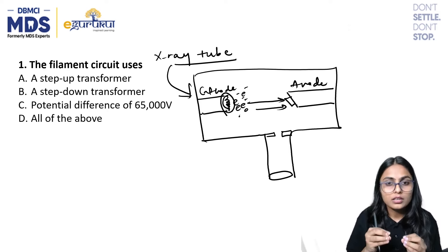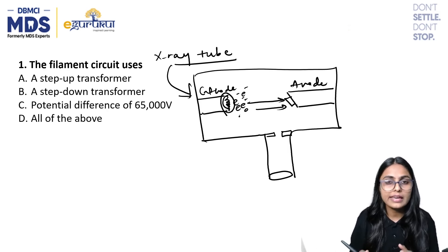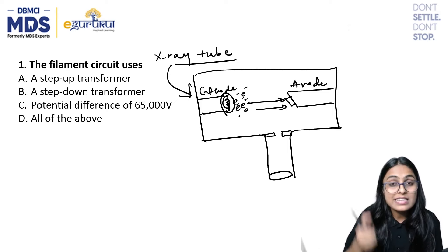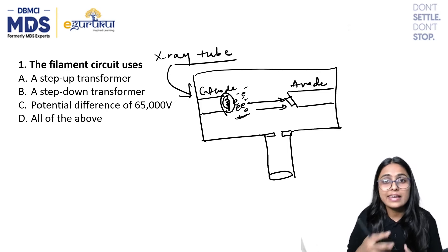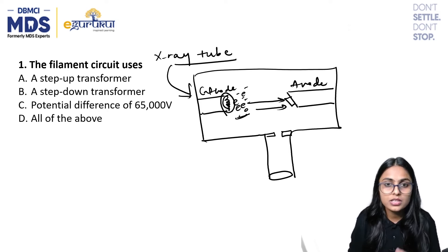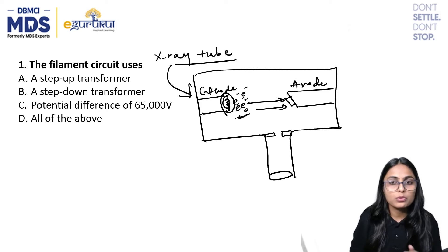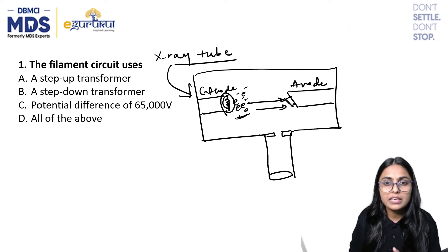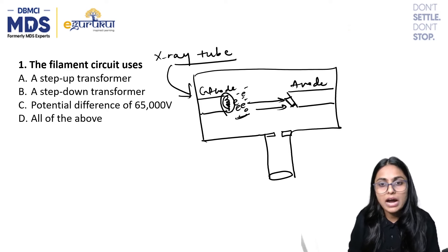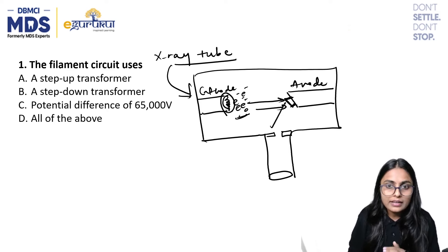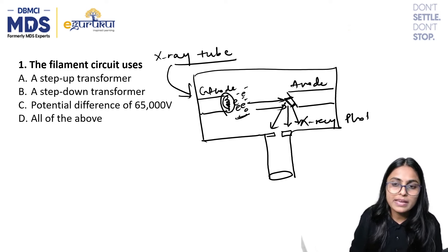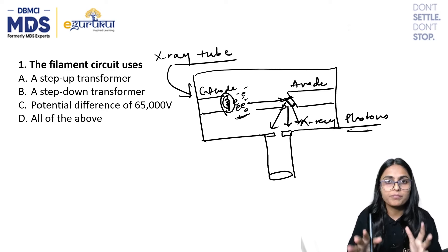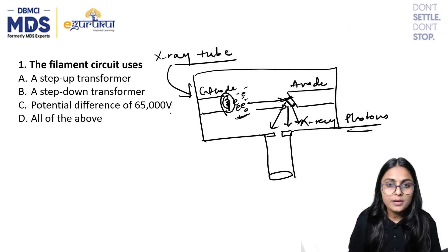We need to send this electron cloud towards the anode, so we need to energize it with kinetic energy. When you press the exposure button, these electrons get energized and acquire the kinetic energy required to travel from cathode to anode. After arriving there, they bombard the anode and produce X-ray photons. This is the basic X-ray production procedure.